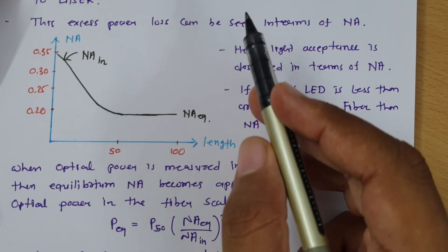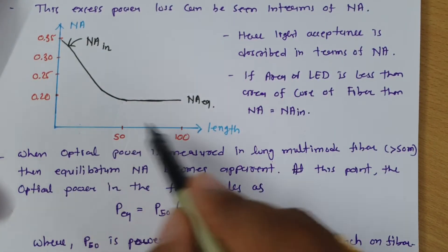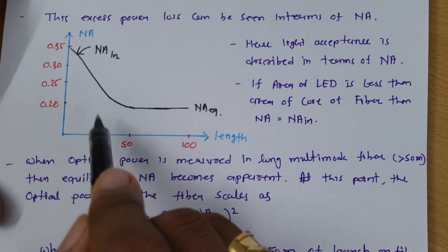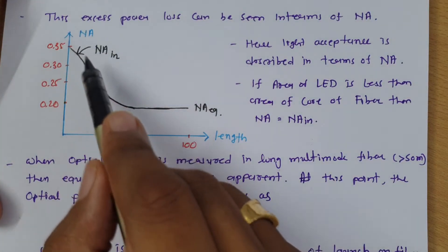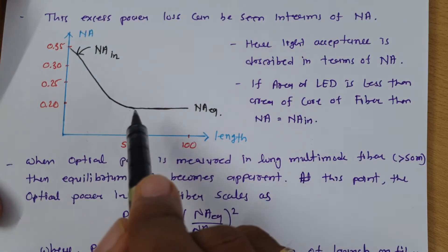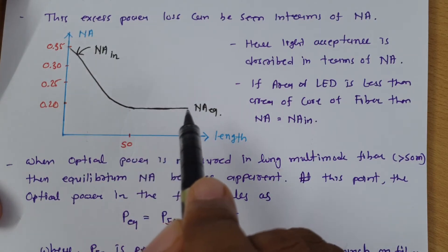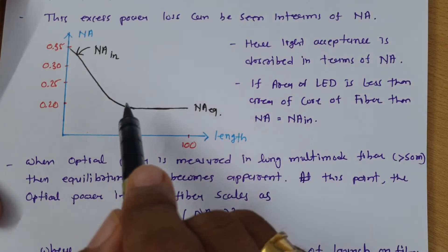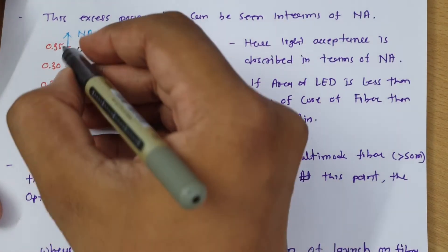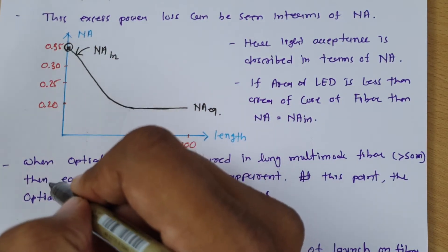This excess loss can be represented in terms of numerical aperture. If you see the graph with length of fiber on the x-axis and numerical aperture on the y-axis, as you increase length, the numerical aperture decreases up to 50 meters of length, and after 50 meters, the numerical aperture becomes constant. That constant numerical aperture is considered as the equilibrium numerical aperture, and at input — at distance zero — the numerical aperture is the input numerical aperture.